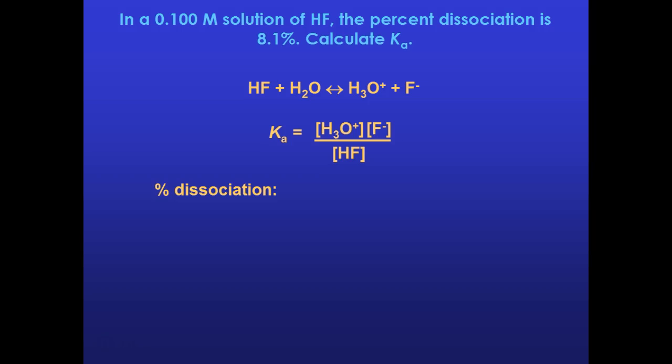If I know the original concentration of HF, and I know the percent dissociation, I should be able to determine the change, which happens to be 0.0081. And according to my ICE chart, that's what my two products should go up by, and that's what my reactant should decrease by, which means virtually nothing.